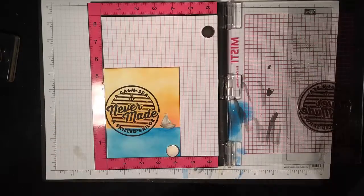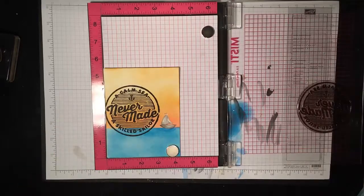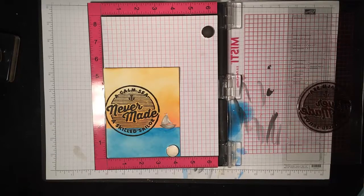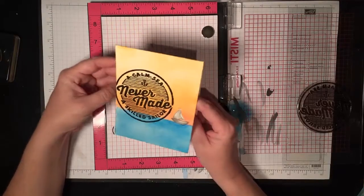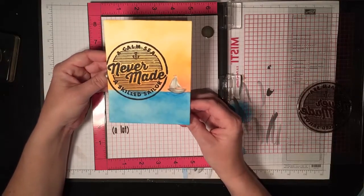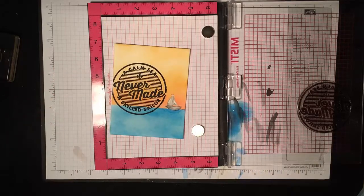So maybe you could say a calm sea never made a skilled stamper, but that is what it looks like when I'm finished, just a fun little scene and a perfect sentiment. I hope you've enjoyed this. Head over to my blog for a chance to win a MISTI, and thanks so much for watching!